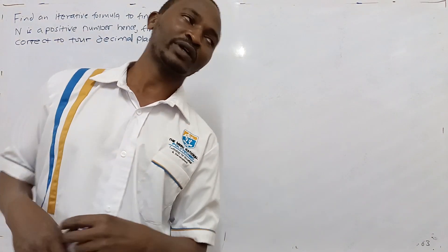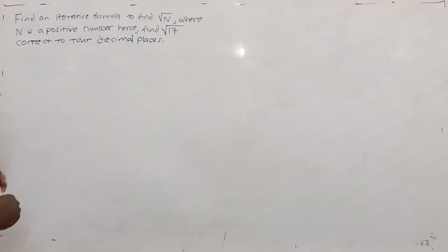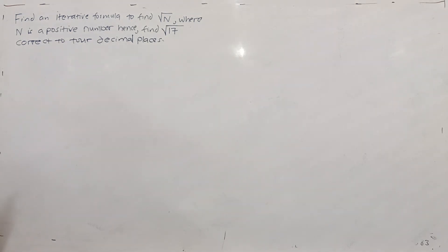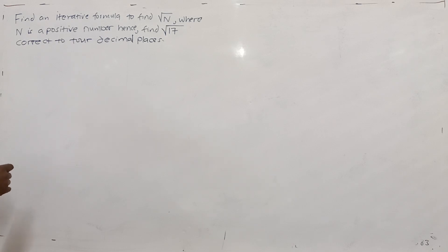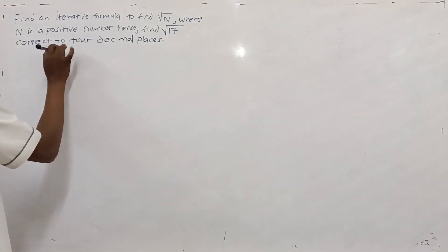Hi, how are you doing? Welcome to this video with this channel. And in this video, we'll do another example of application of Newton's method. You are told: find an iterative formula to find the root of n, where n is a positive number, hence find the 5th root of 17 correctly to some decimal places. And this is how we go about it.